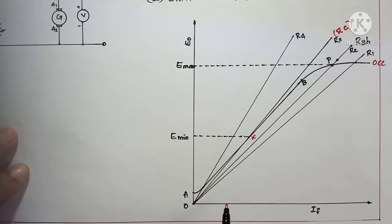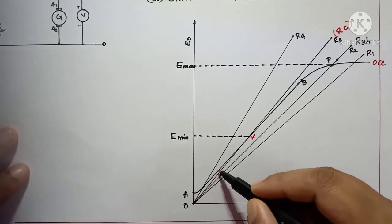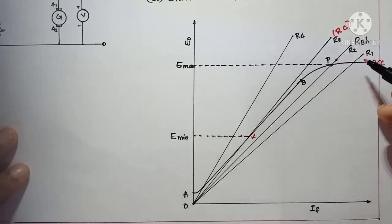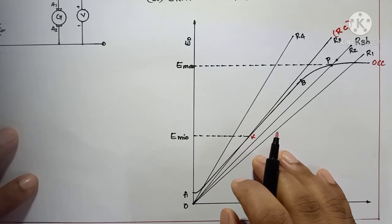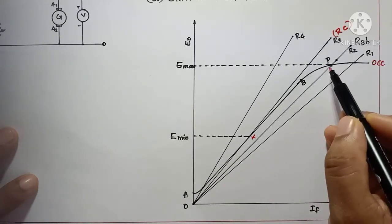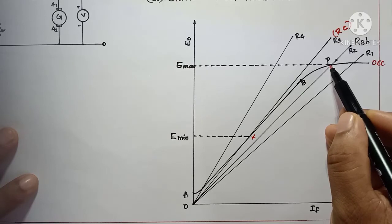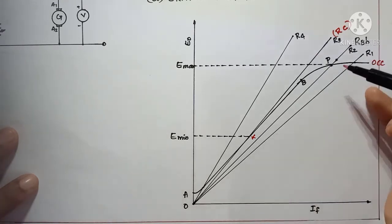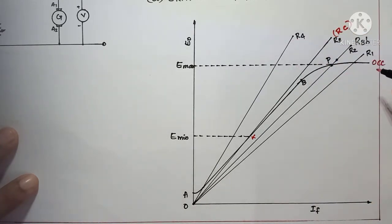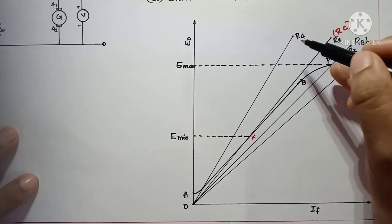When you increase the field current from zero to a particular value, the voltage will also increase and you will get this open circuit characteristics. At the point P — that is the maximum point — the generator can build up maximum voltage. And you can see many lines here: r1, r2, r3, and r4.